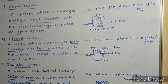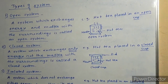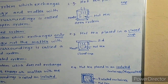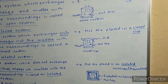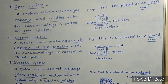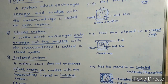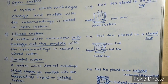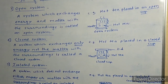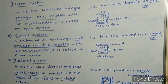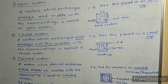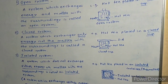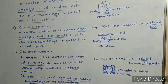In the open system, hot tea is in an open cup. In the closed system, hot tea is in a closed cup. In the isolated system, hot tea is placed in an isolated container — a thermoflask — where neither heat nor matter exchanges with the surroundings. So: open system exchanges energy and matter; closed system exchanges only energy; isolated system exchanges neither.